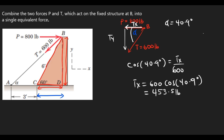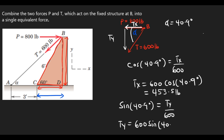Now let's find the Y component. The Y component ty is opposite, so sine of 40.9 degrees equals ty over 600. So ty equals 600 sine of 40.9 degrees. Simplifying, that gives us 392.8 pounds.